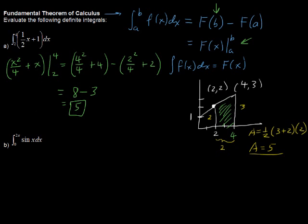Now, let's look at the next one. The integral of sine of x, evaluated from 0 to 2 pi. Well, the antiderivative of sine x is negative cosine x, evaluated from 0 to 2 pi.